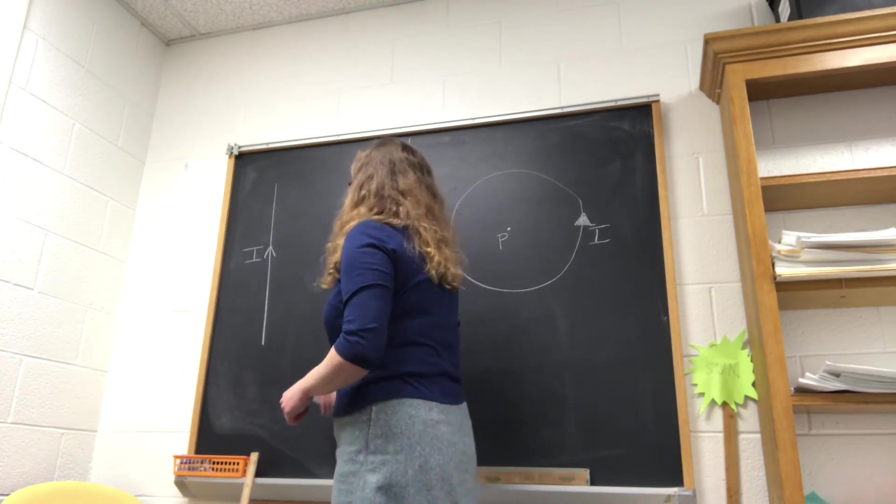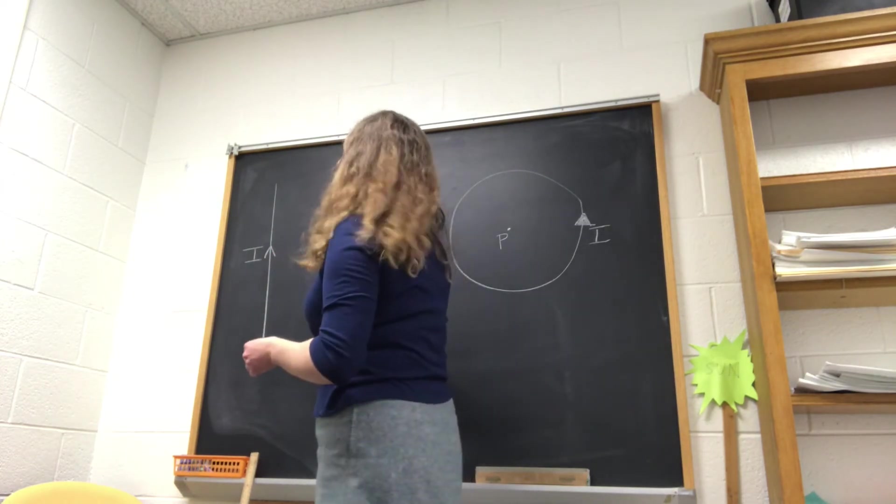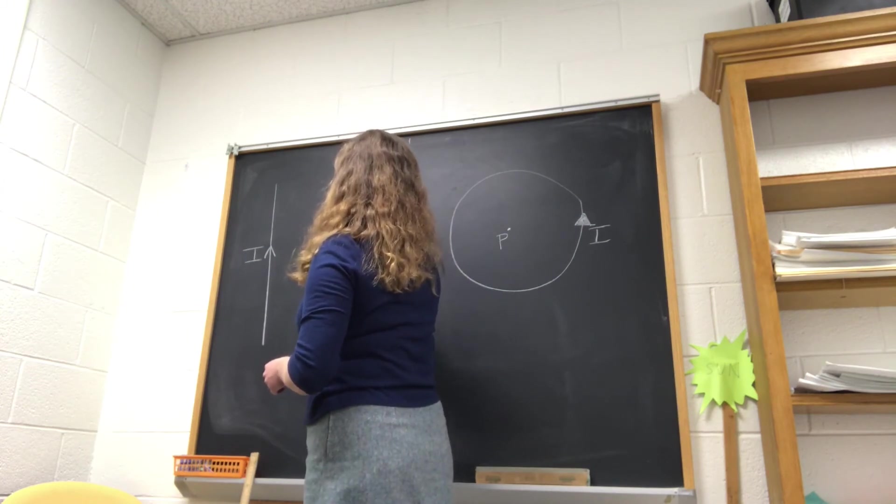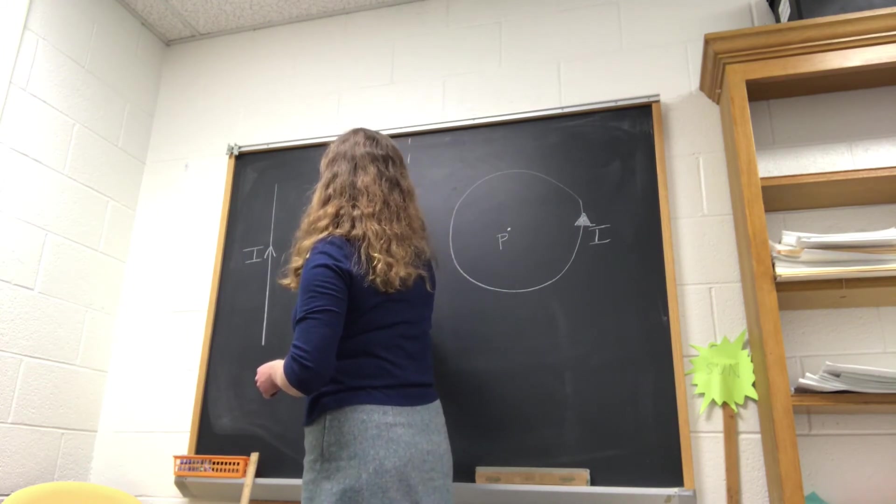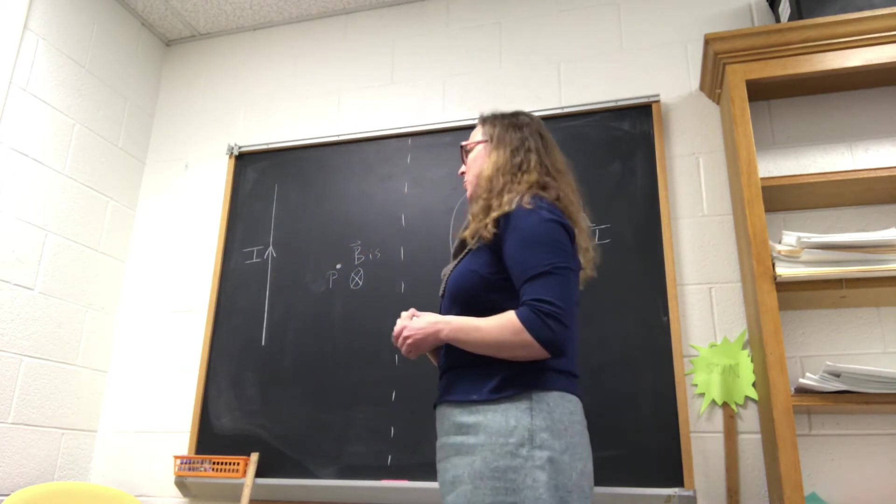it's going to be going into the board. So at point P here, from curly straight, we can say that the direction of the magnetic field is into the board.